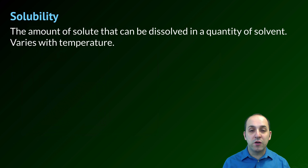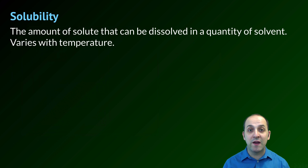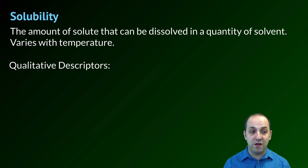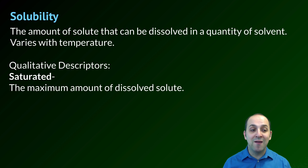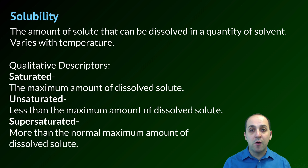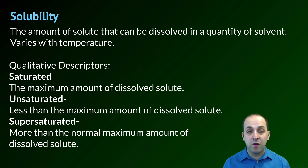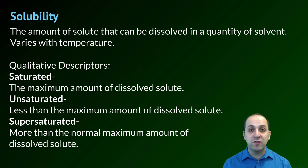The next section of this video is going to talk about solubility. Solubility is simply the amount of a solute that can be dissolved in a particular amount of solvent. We're going to start with some qualitative descriptors. A solution can be saturated, unsaturated, or supersaturated. In each case, these terms refer to the amount of the solute dissolved in the solvent. Saturated solutions have the normal maximum amount, and unsaturated solutions have less than the normal maximum amount of solute dissolved in a particular amount of solvent.